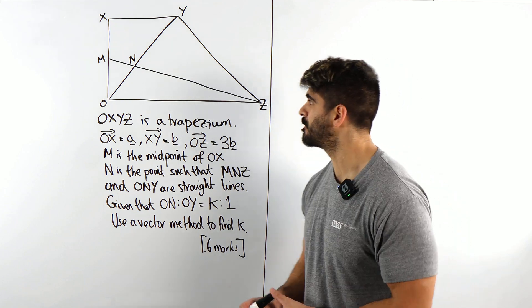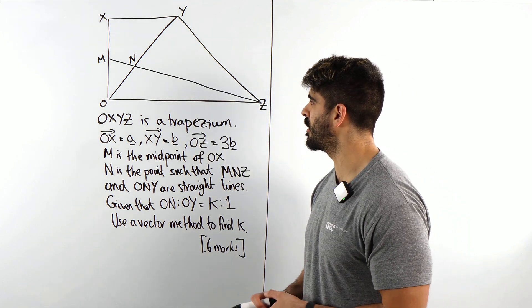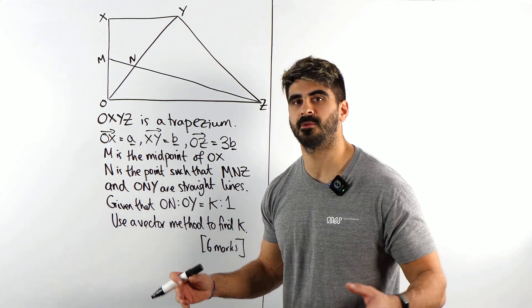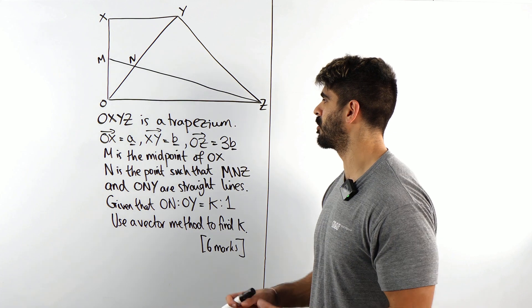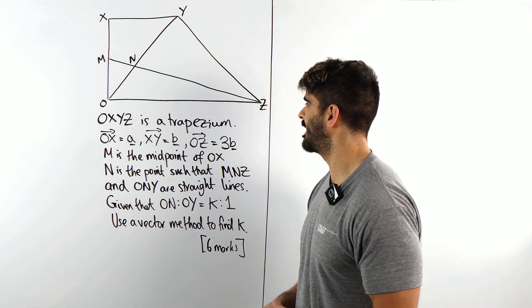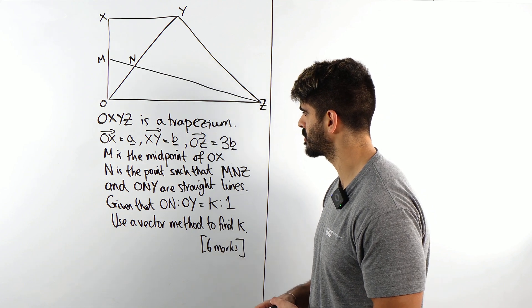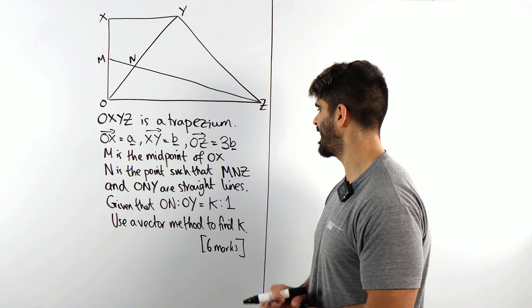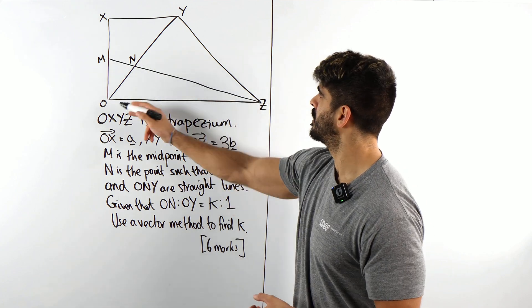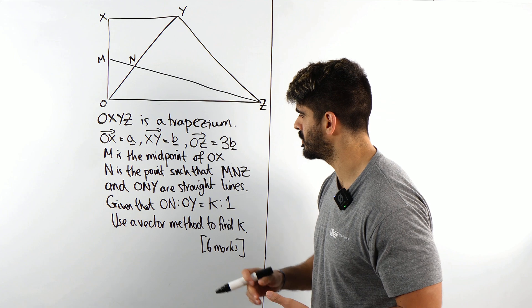So here we've got a trapezium OXYZ, or in America they would say trapezoid. We've got O to X is A, XY is B, OZ is 3B. M is the midpoint of OX, N is the point such that MNZ and ONY are straight lines.